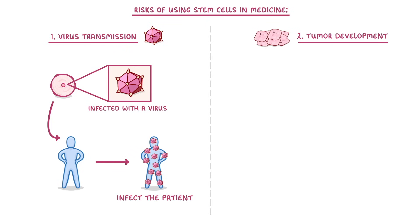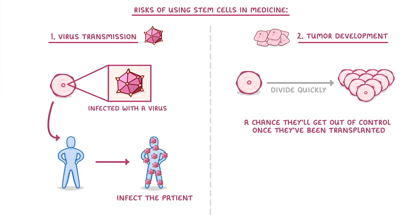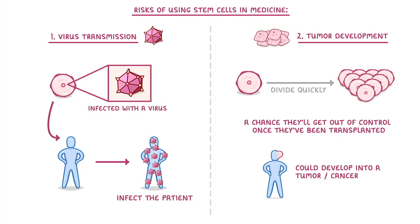Tumour development is the idea that because stem cells can divide so quickly, there's a chance that they could get out of control once transplanted into the patient, and so they could go on to develop into a tumour or a cancer.